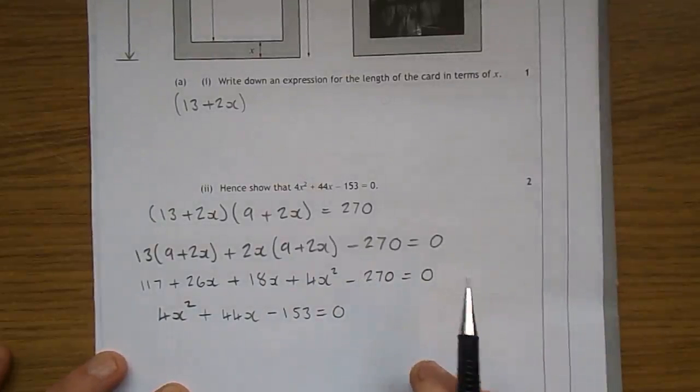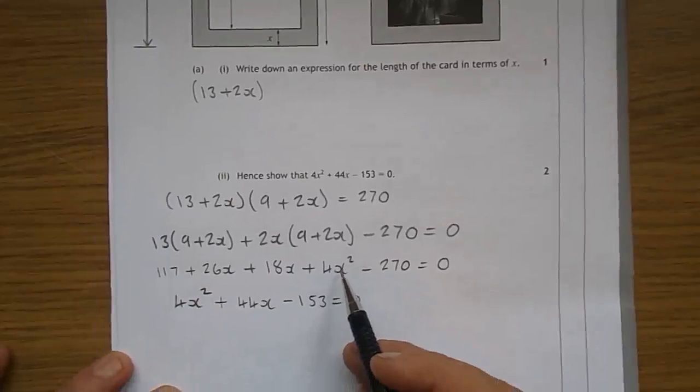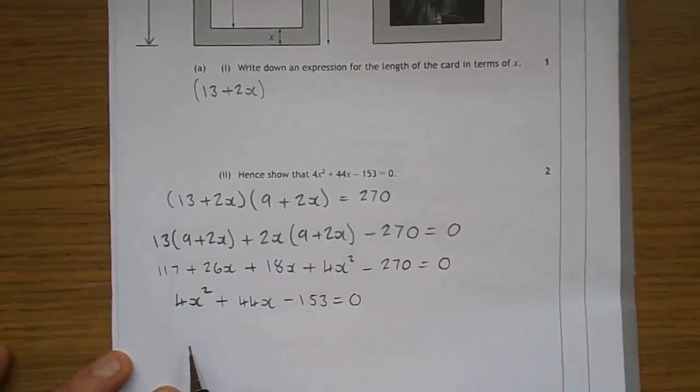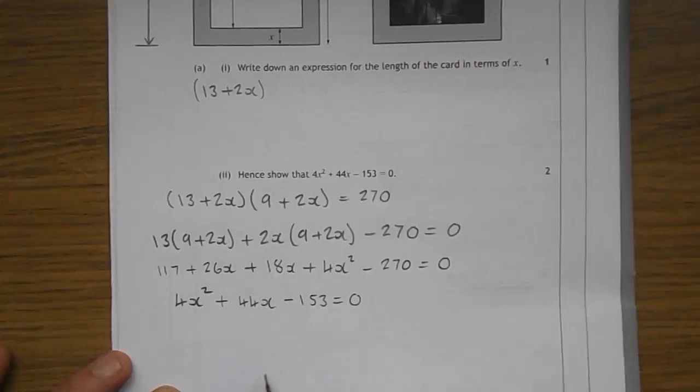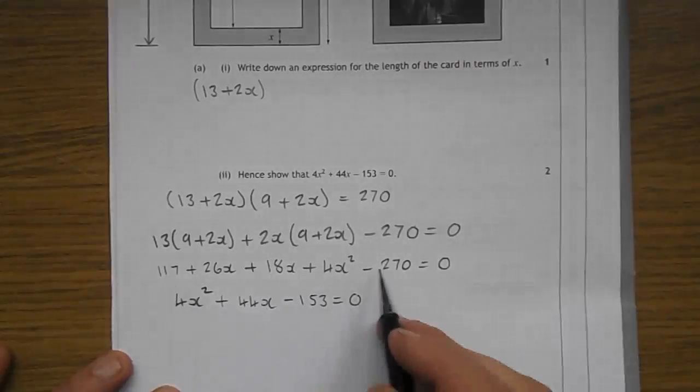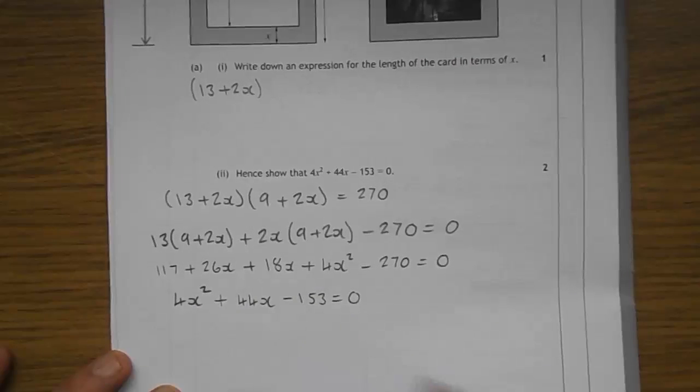We have a little bit of tidying up to do here. 4X squared comes up to the front. 26X, and what else is that? 18X. Gives you 44X, and you have 117, take away 270, gives you minus 153. That equals 0. And there we have that proved.